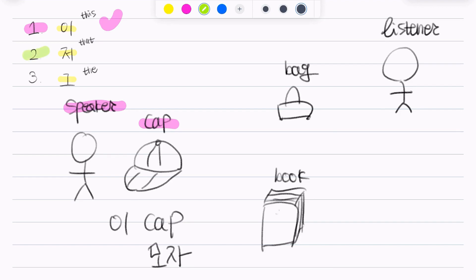For 저, 저 is used when the thing is far from the speaker. Then we would say, 저, book. Which is, 책. 저 책. 저 책.